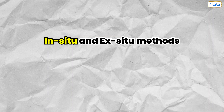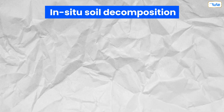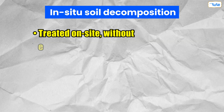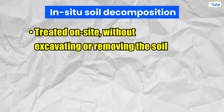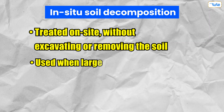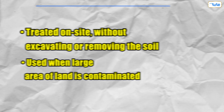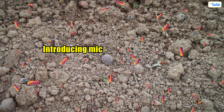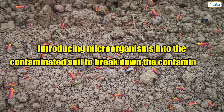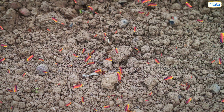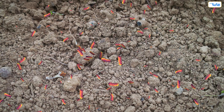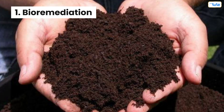There are two main approaches: in-situ and ex-situ methods. In-situ soil decontamination refers to the process of treating contaminated soil on site without excavating or removing it. This method is typically used when the volume of contaminated soil is large and removing the soil would be disruptive or expensive. One in-situ method is bioremediation, which involves introducing microorganisms into the contaminated soil to break down the contaminants. The microorganisms consume the contaminants as a food source and convert them into less harmful substances.